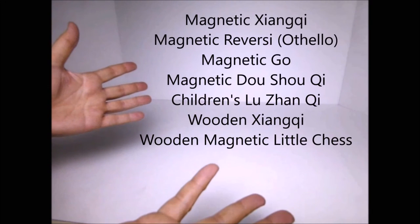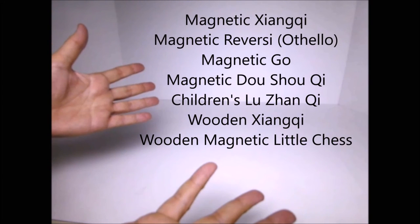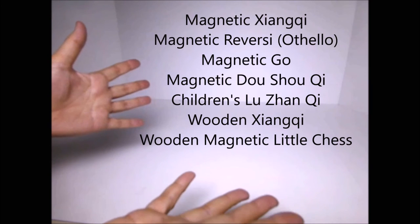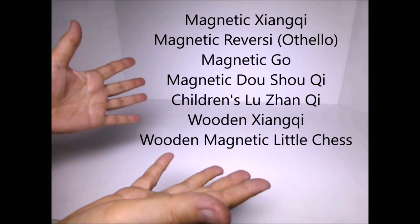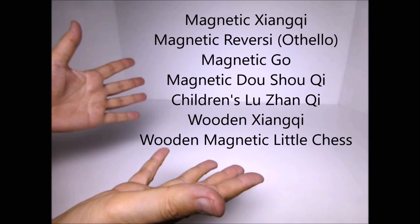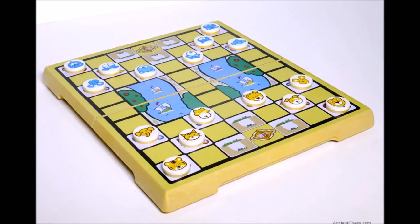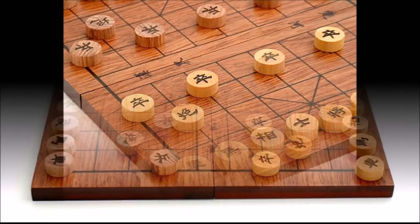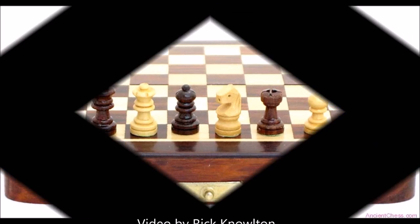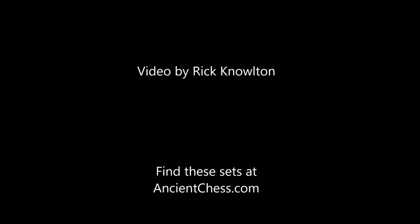So, those are six sets I showed you just now. Xiangqi, Reversi, Go, Dou Shou Qi, Luzhanqi, another Xiangqi, and a little wooden magnetic chess set. So, go to my website, ancientchess.com. I've got these things for sale. They're very affordable, much less expensive than the higher end, full-size sets that I sell. But they're great to play with, great for gifts. I hope you've enjoyed this little show. Give me the thumbs up and pass this around to other people you think might be interested. Thanks for watching, ancientchess.com.